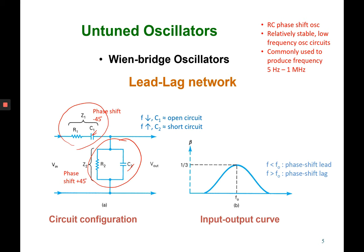On the input-output curve, if we see here, when the frequency is less than frequency of oscillation for this particular circuit, the phase shift will lead. This is what happens when it leads. And when the frequency is more than frequency of oscillation, it will lag. So this would be the lagging part. This is lead-lag network, not Wien Bridge oscillator.